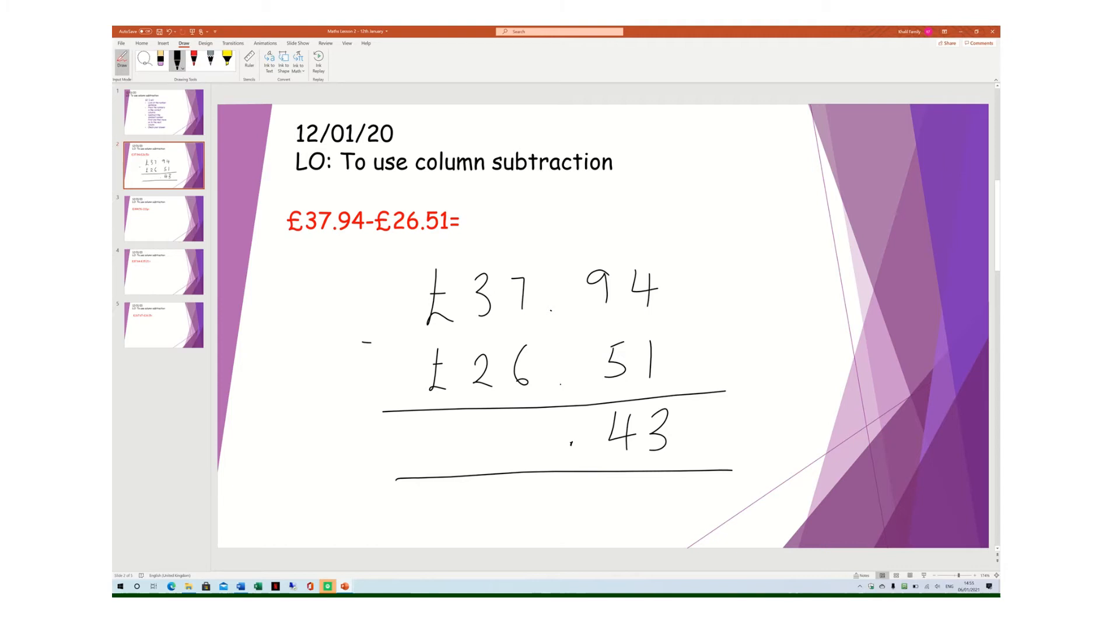7 take away 6 is 1, 3 take away 2 is also 1, and then my pound sign. So my answer to £37.94 take away £26.51 is £11.43. Sound easy? Excellent, let's have a go at the second one.